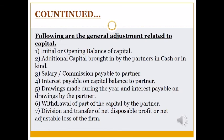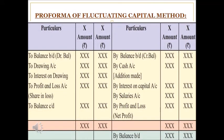The proforma of Partners Capital Account under Fluctuating Method shows: on the credit side — By Balance Brought Down from trial balance, By Additional Cash, By Interest on Capital, By Salary, and By Profit and Loss Account for net profit. On the debit side — To Balance Brought Down if debit balance exists in trial balance, To Drawings, To Interest on Drawings, and To Profit and Loss Account for net loss transferred to the debit side.